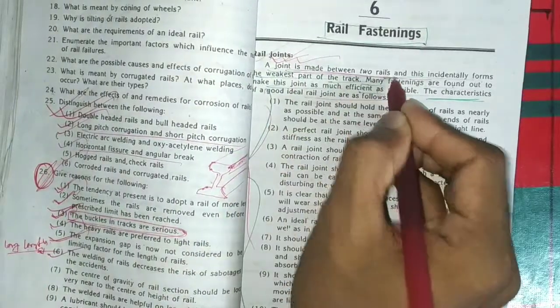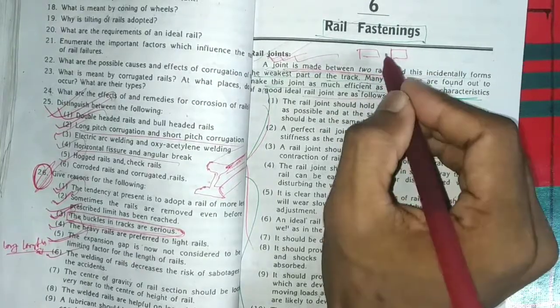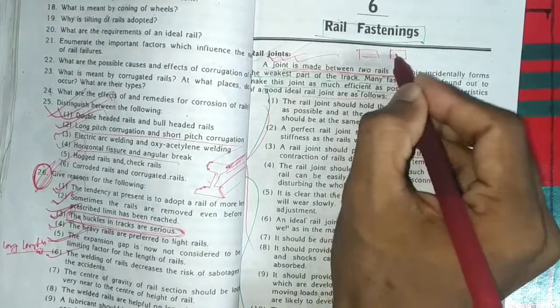This joint is made between two rails, which is called the rails. Now I have to create a rail joint. This joint is a very easy way to do this.